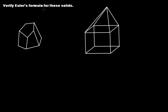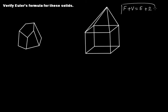Verify Euler's formula for these solids. Euler's formula for any polyhedron is F plus V — that is faces plus vertices — is equal to edges plus two. This is Euler's formula.